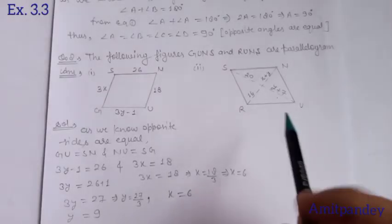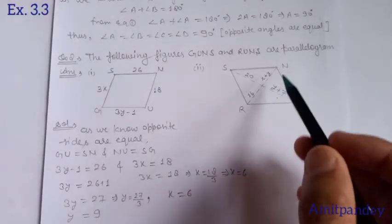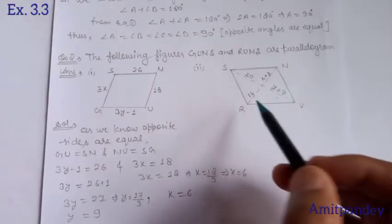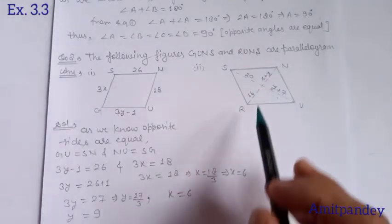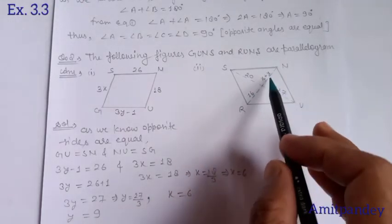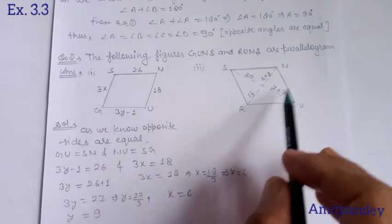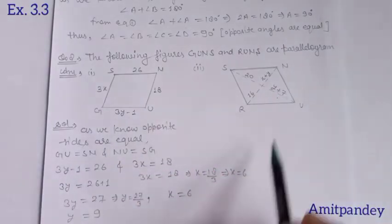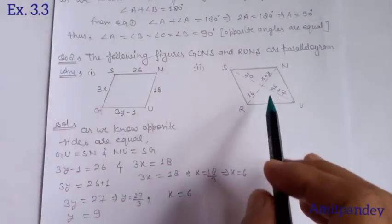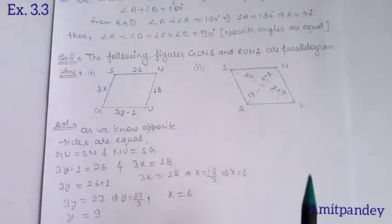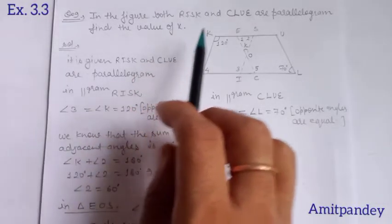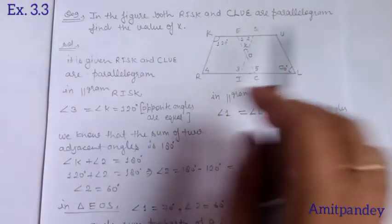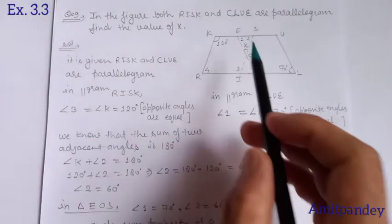For the other part, students, you have to do it as homework by using the property that diagonals bisect each other — meaning 16 equals x plus 1 and 20 equals y plus 1. Similarly, you can find the value of x and y. Now let's do question number 9: In the figure, both RISK and CLUE are parallelograms. Find the value of x.